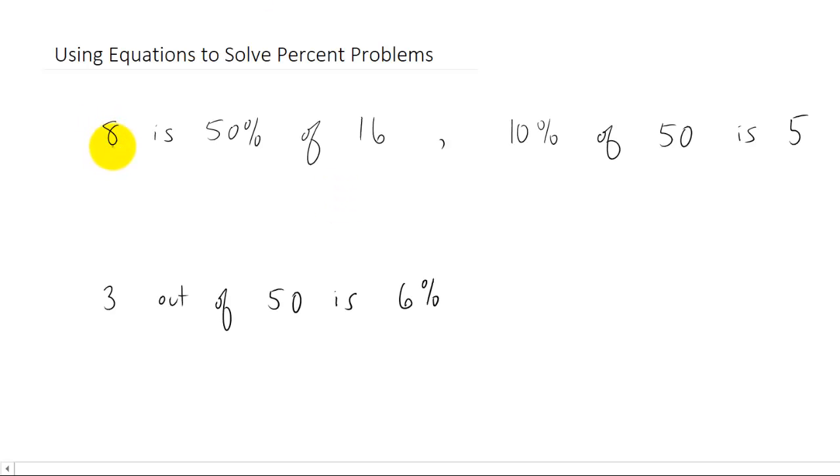Okay, so all these statements are true. 8 is 50% of 16, 10% of 50 is 5, and 3 out of 50 is 6%. Those are all true statements, but what we want to do is we want to learn how to convert these statements into equations.